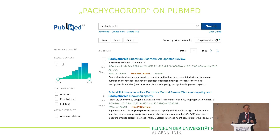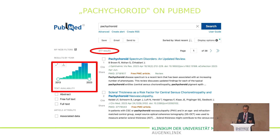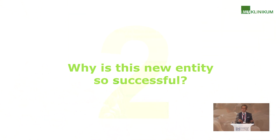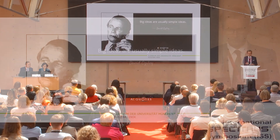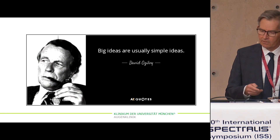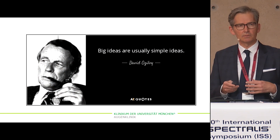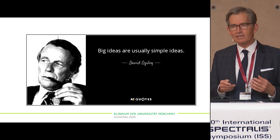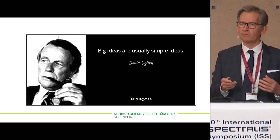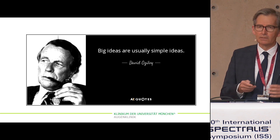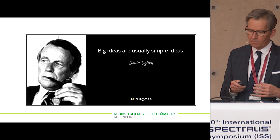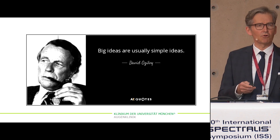Since then the number of publications has increased dramatically — just checked yesterday, 377. So the question is, why is this new entity so successful? Is it just a simple idea that we have a second pathomechanism leading to changes of the RPE, choroid and retina, similar to AMD but with a primary dysfunction of the choroid?